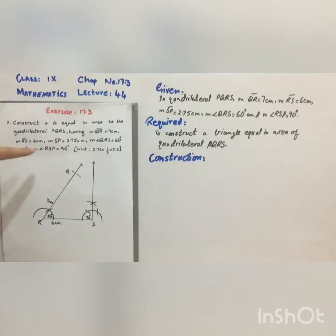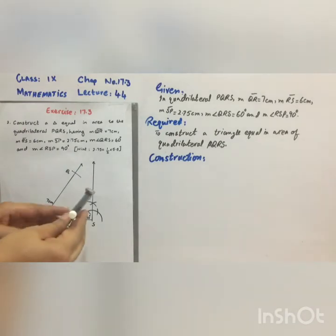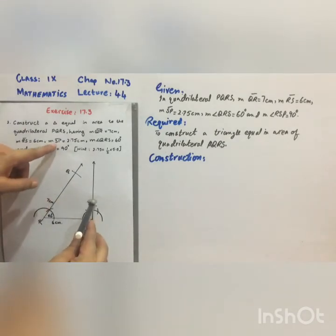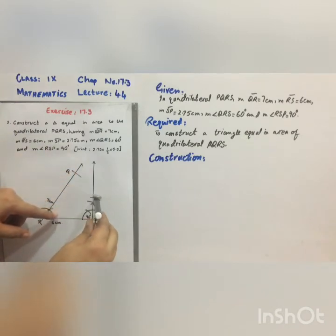Then we are given the measurement of SP which is 2.75 cm, approximately 2.8 cm. Again adjust the compass for 2.8 cm. SP is equal to 2.8 cm.